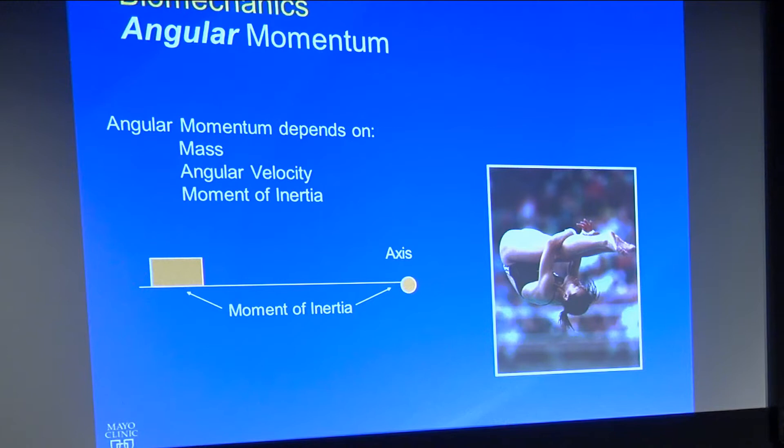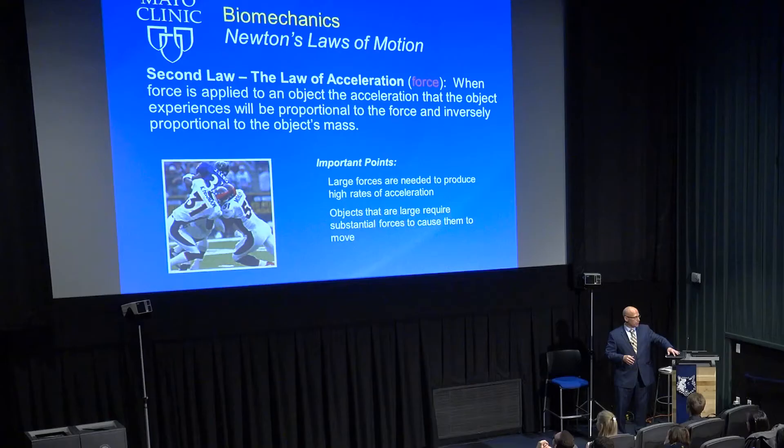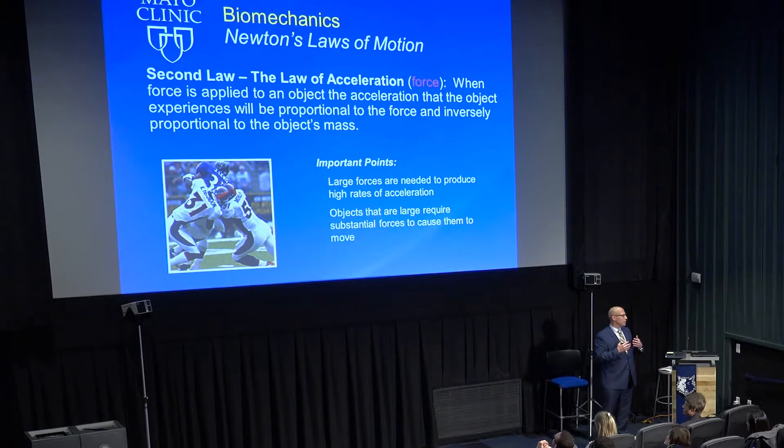Angular momentum: as we move, we have momentum in the linear plane — my center of mass has momentum moving forward — but movement also affects rotation. My joints are rotating, and each segment of my body has momentum and inertia. Angular momentum depends on mass, angular velocity, and the moment of inertia about a rotational axis. For angular momentum to remain constant, you have to either increase or decrease inertia as conditions change.